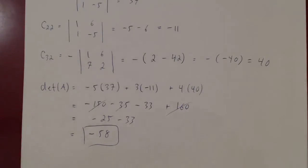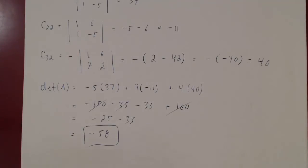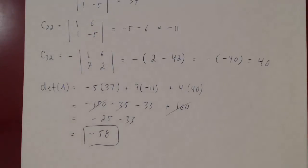You could try any other column or row of your choice using cofactor expansion, and you will always find the determinant of A to be negative 58. Why this is always true, however, is a whole other question.